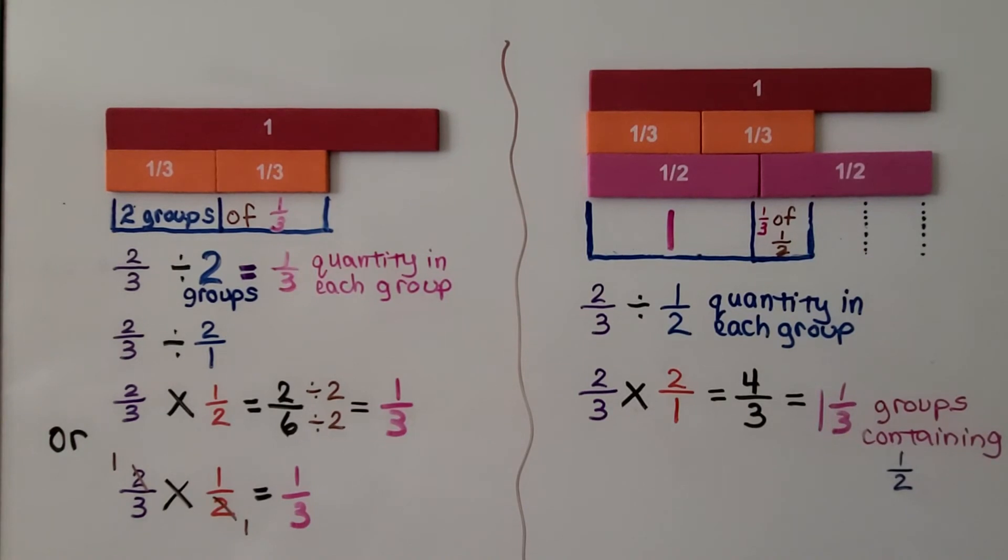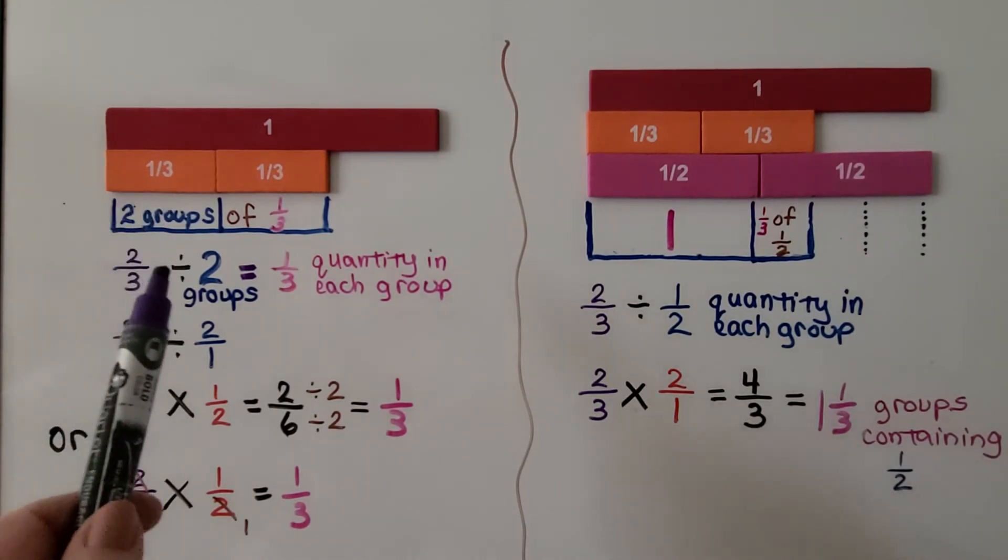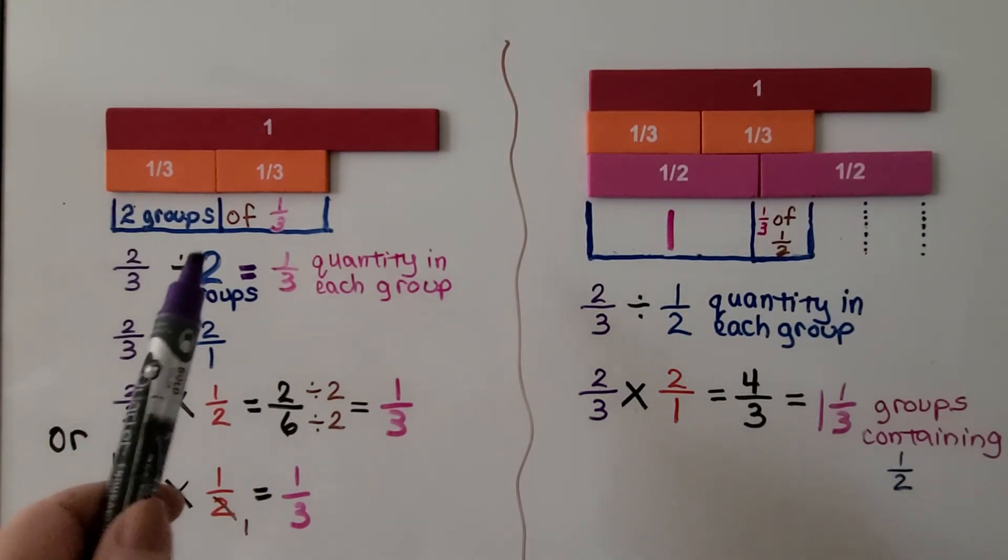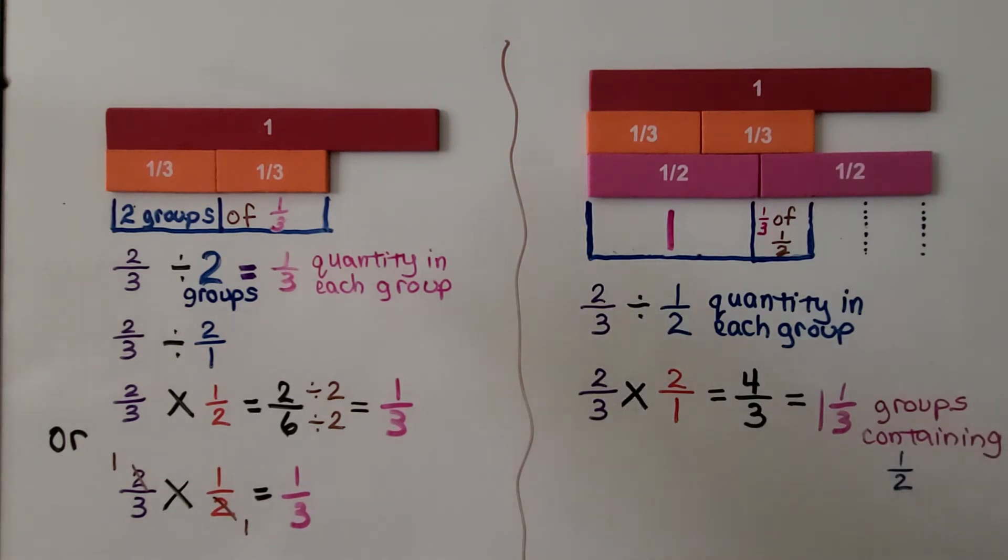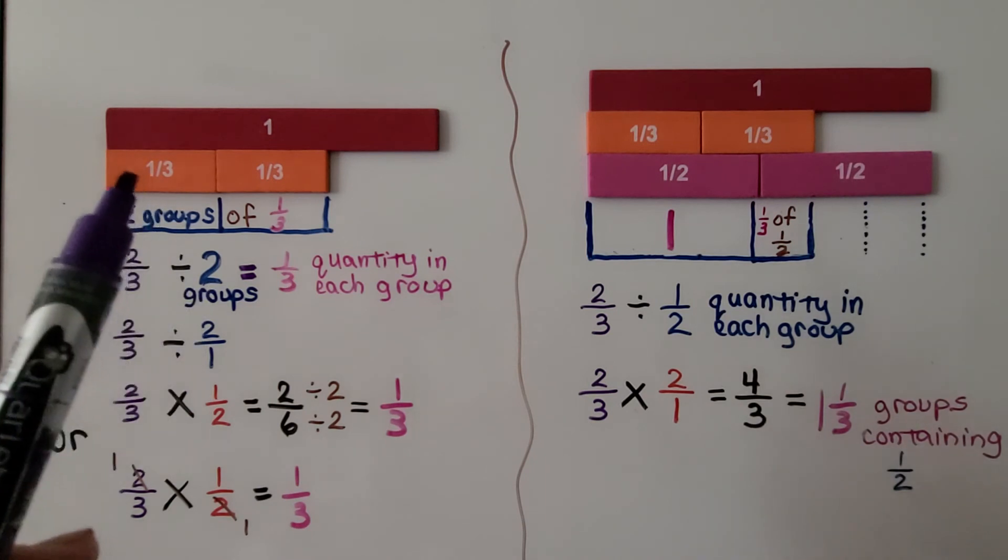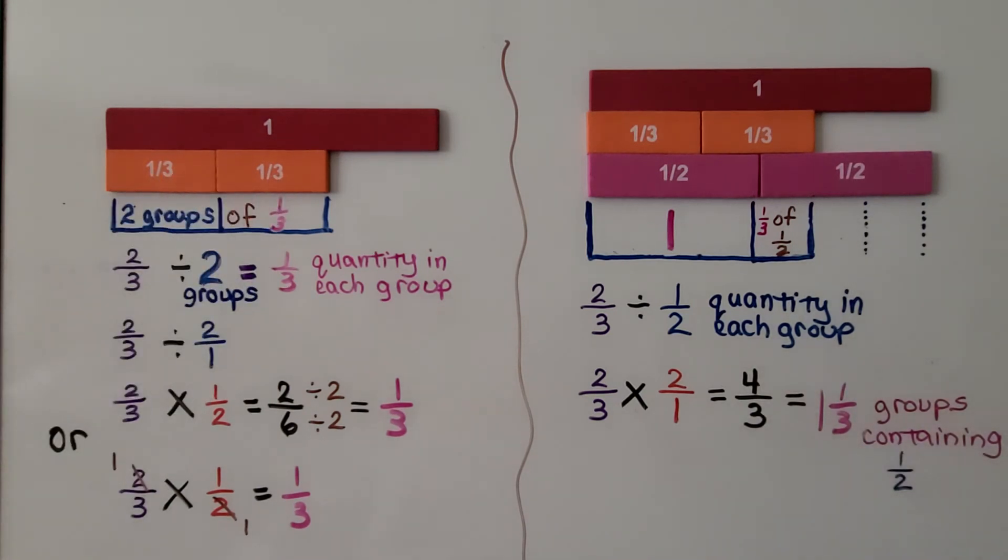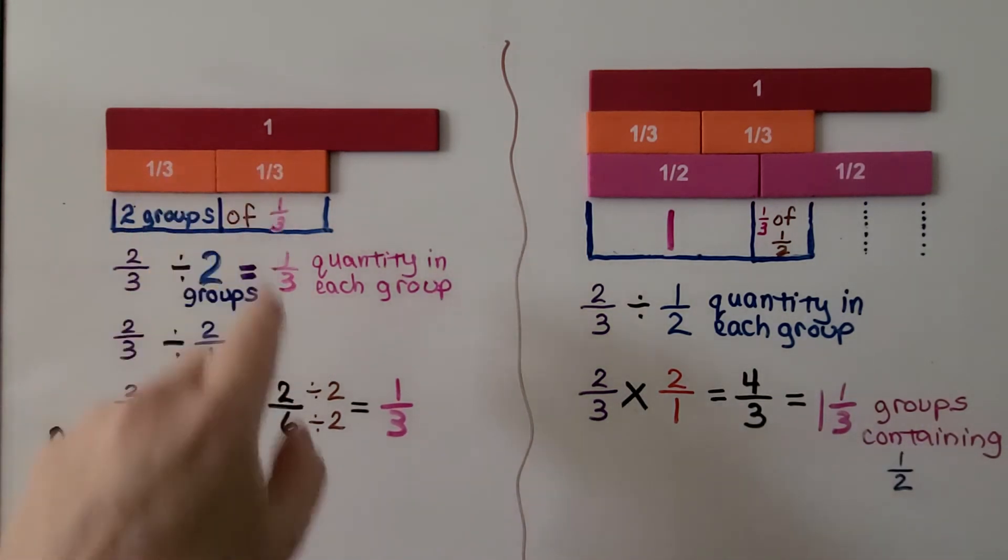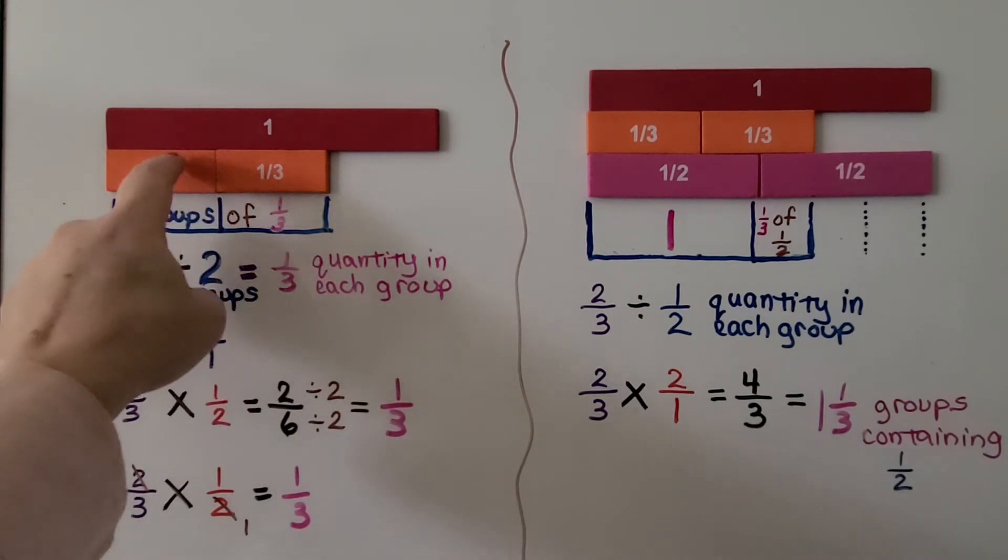Now I want to show you the difference between dividing a fraction by 2 and dividing it by ½. We have ⅔, and we want to divide it by 2. If we divide ⅔ by 2, we're going to have 2 groups of ⅓.